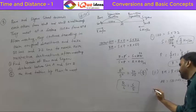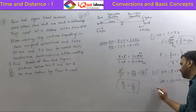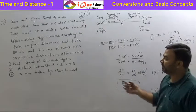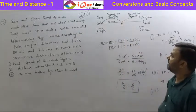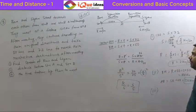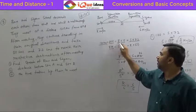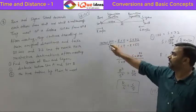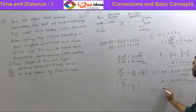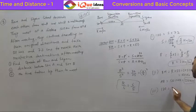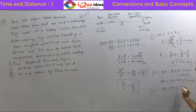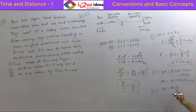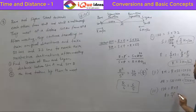The third part asks for the time taken by them to meet, which is T. From r × T = 120, and r = 2, we get T = 120/2 = 60 hours. So they meet 60 hours after starting.